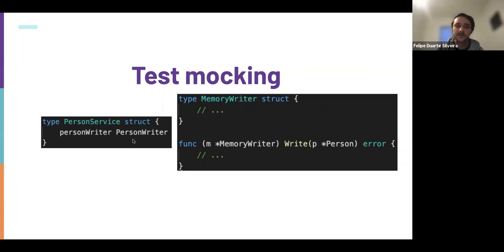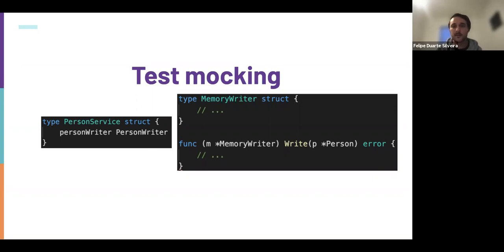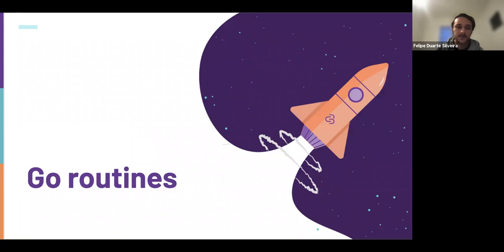You can also use this for composition — for example, pass a PersonWriter to the service that is a cache writer, and inside that it uses the MySQL writer. You can easily compound new layers of writers as long as they respect the interface signature. This allows both test mocking and architectural improvements in the code.